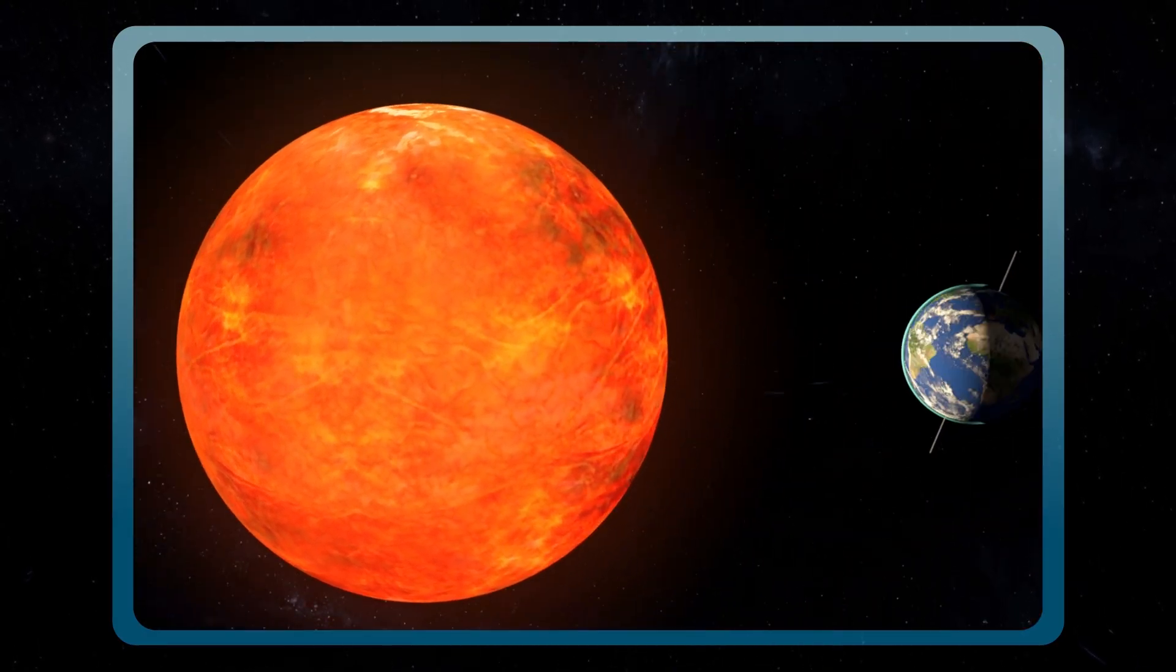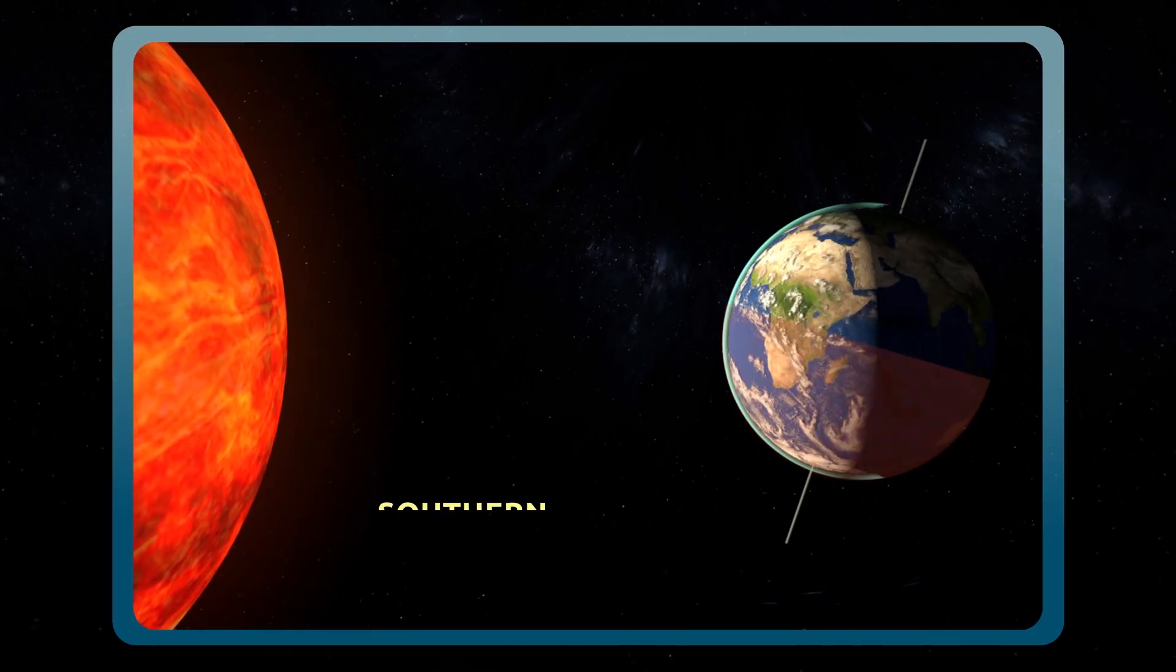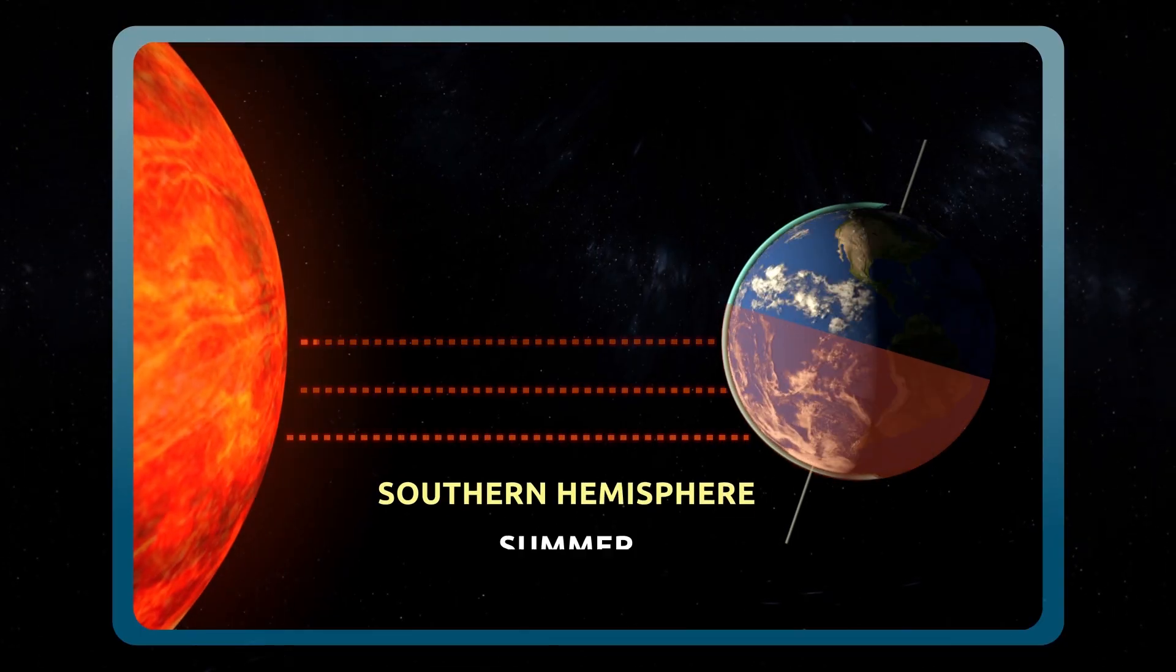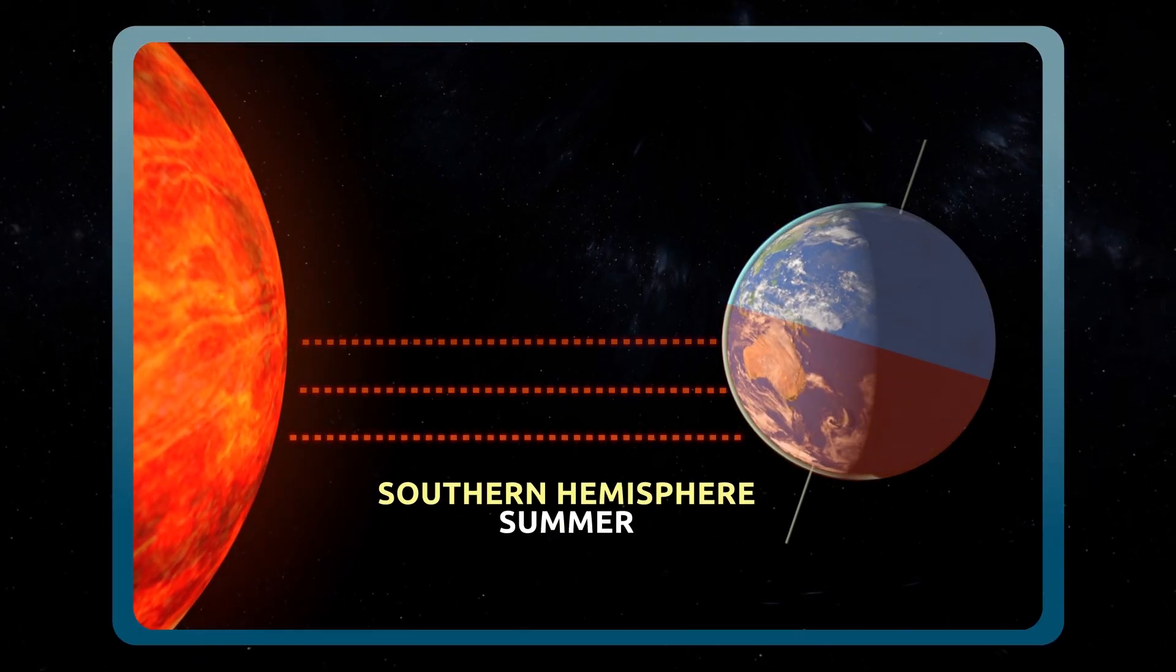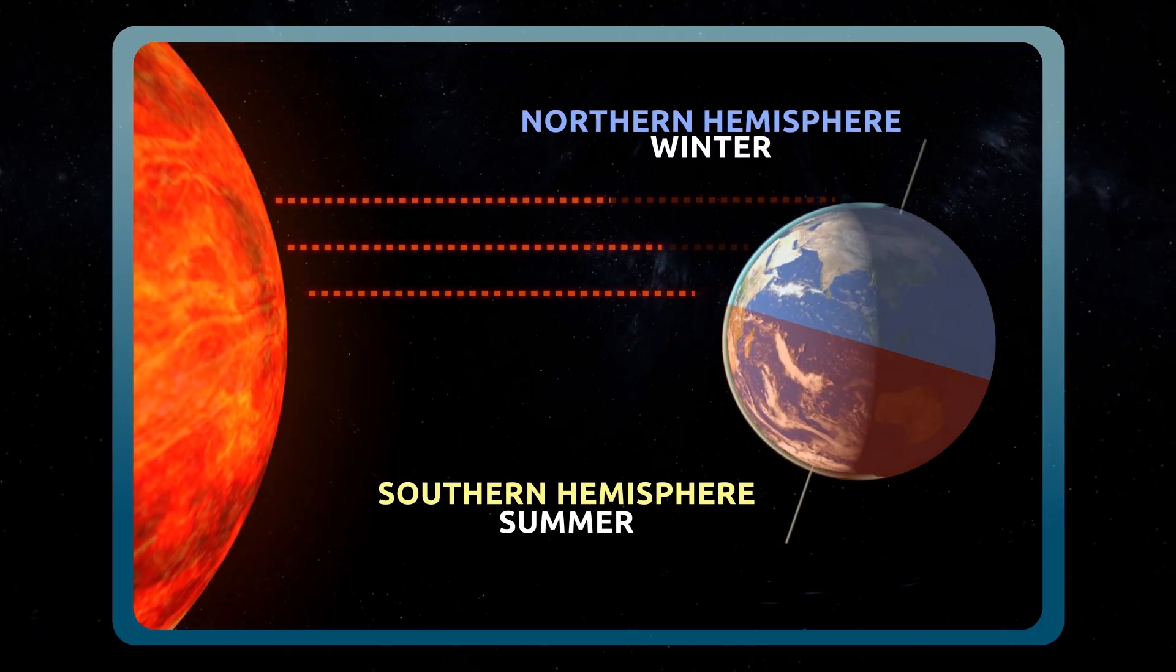The opposite will occur in six months. Sunlight will reach the southern hemisphere in a more direct way and it will be summer, while in the northern hemisphere it will be winter.